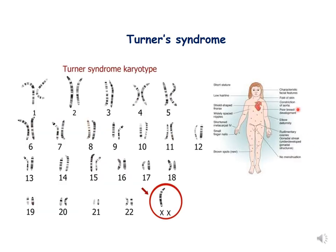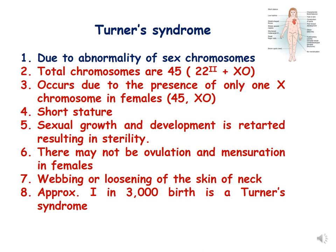The second example of aneuploidy in humans is Turner syndrome, which is represented by the XO condition — only one X chromosome is present and the other X is missing. Due to this abnormality of sex chromosomes, total chromosomes are 45, represented by 22 pairs plus XO. These females have short stature, sexual growth and development is retarded resulting in sterility, there may not be ovulation or menstruation, and there is webbing or loosening of the skin of the neck.